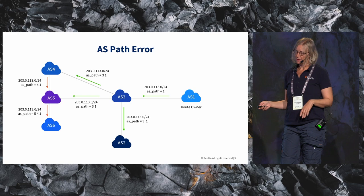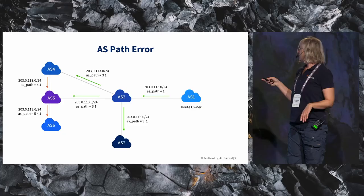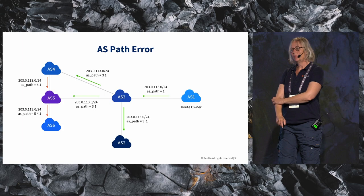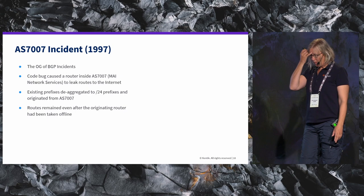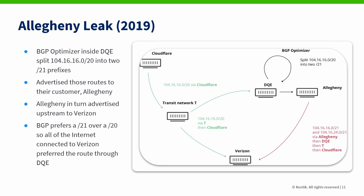The other example is the AS path error. We have a prefix originated at AS1, and it is propagated. Then AS4 is inserting themselves as the next step in the AS path instead of AS3 where it is coming from. Again, a typical misconfiguration error — somebody fat-fingered it.